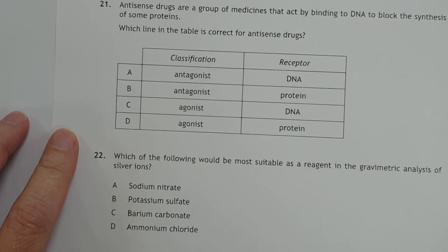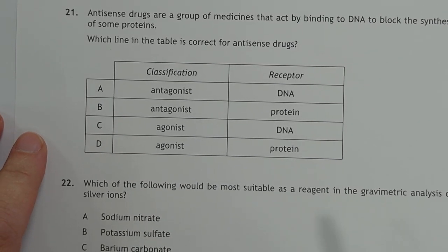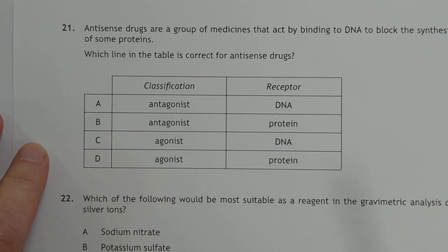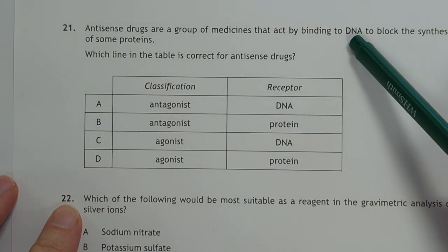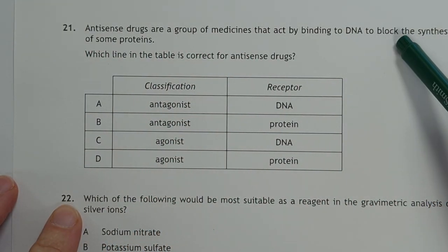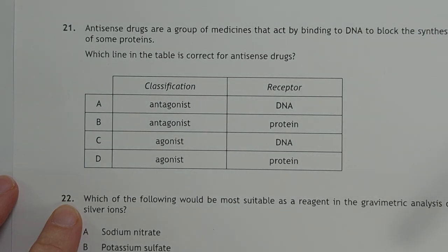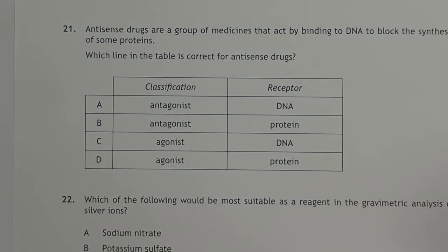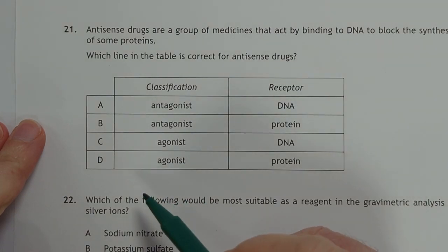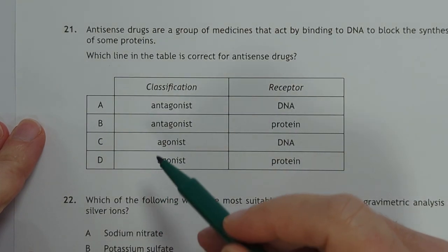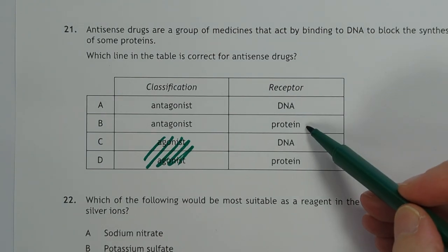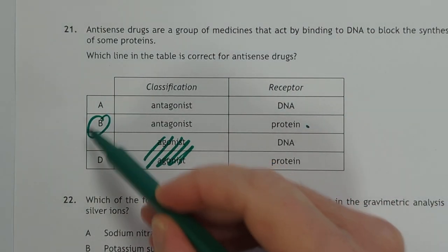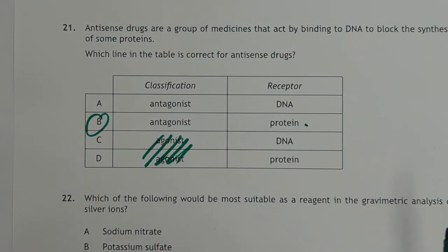Can we zoom in on this for easier reading? Anti-sense drugs are a group of medicines that act by binding to DNA to block the synthesis of some proteins. Which table is correct for anti-sense drugs? Well, they're obviously classified as an antagonist, so these two are out. And the receptor — they're expecting you to realise the receptor is a protein molecule. So, that's a piece of cake.